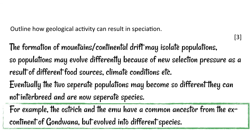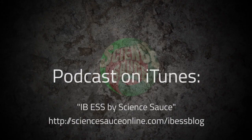One example is ostriches and emus — flightless birds that each have a common ancestor. They both evolved from the same single species that lived on the continent of Gondwana in the geological past, but have now evolved into different species.